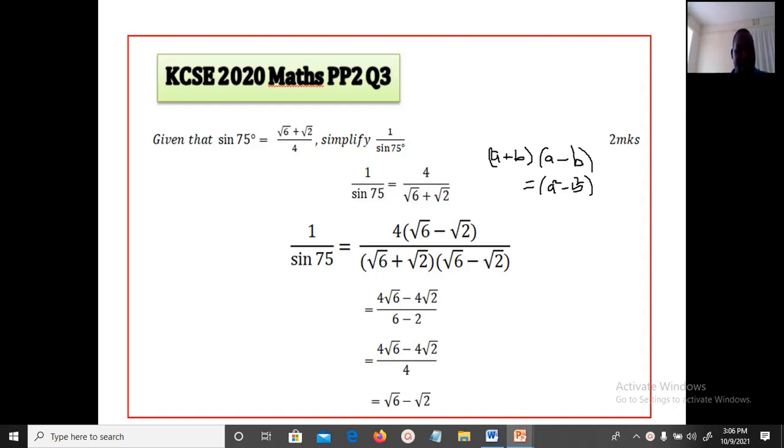Now the question is: given that sine 75 degrees equals root 6 plus root 2 over 4, simplify 1 over sine 75 degrees. Now the first thing we are going to get, to solve 1 over sine 75 degrees, we are going to find the reciprocal of both sides.